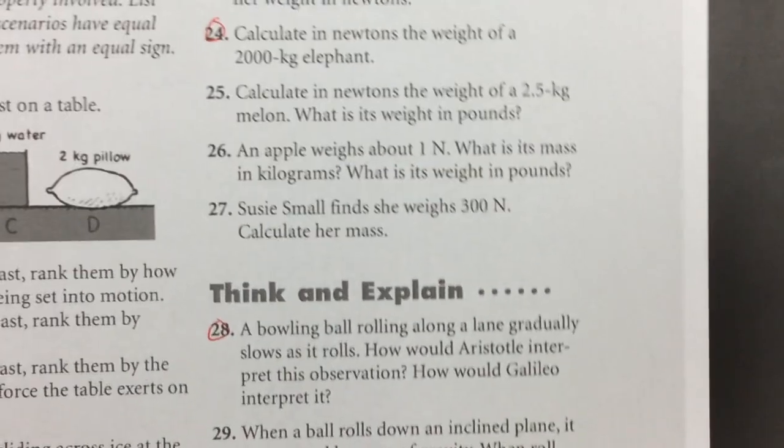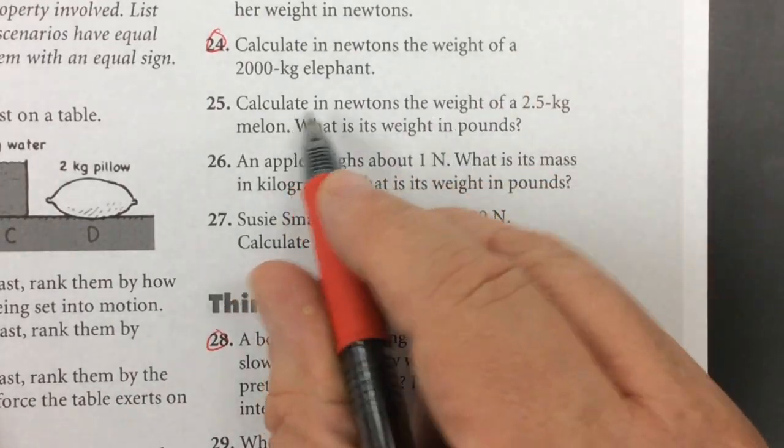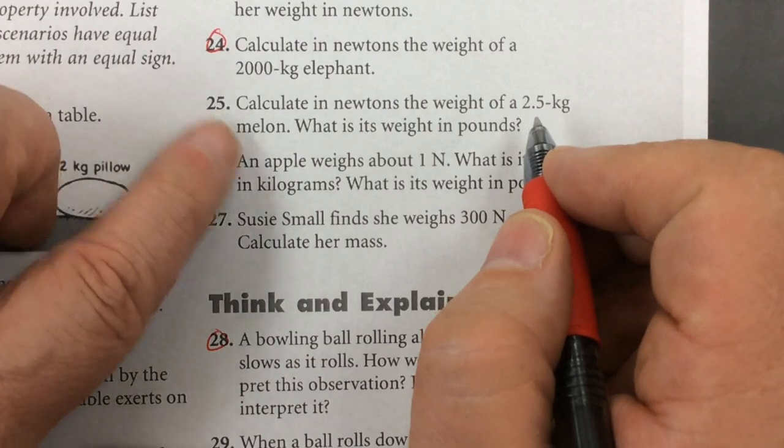So number 25 is our next one. Calculate in newtons the weight of a 2.5 kilogram melon.